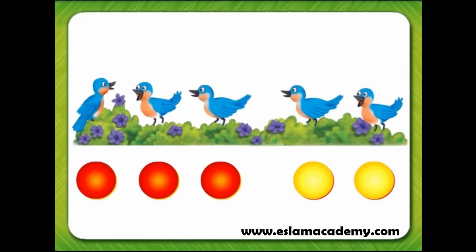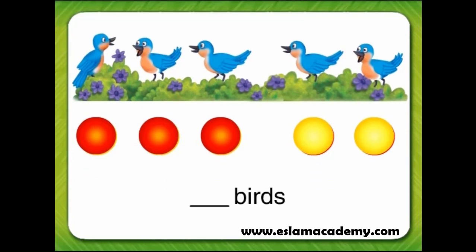Now there are five birds singing in the grass. We have five counters, one for each bird. So let's write a five in the answer blank.